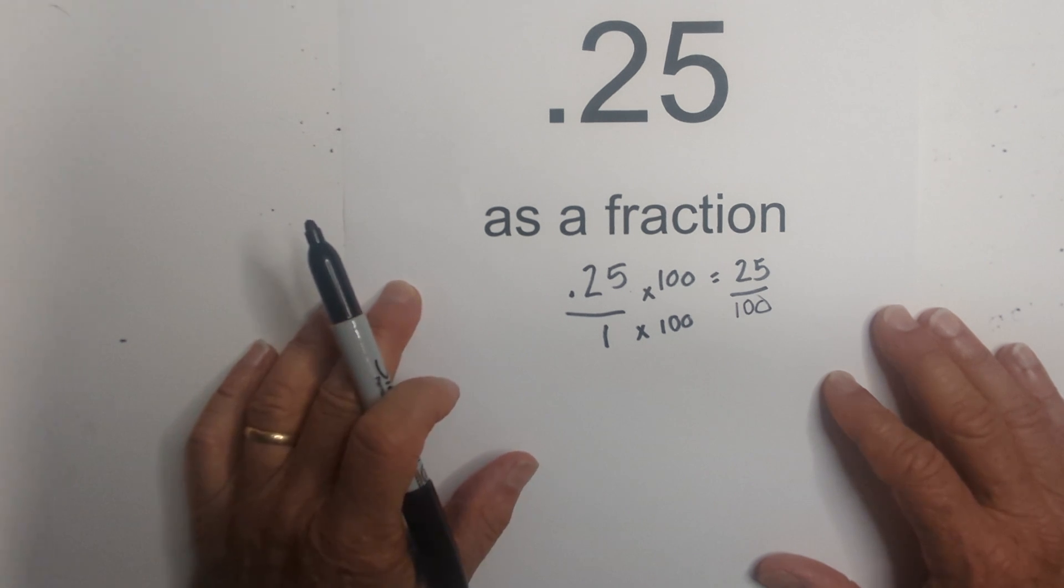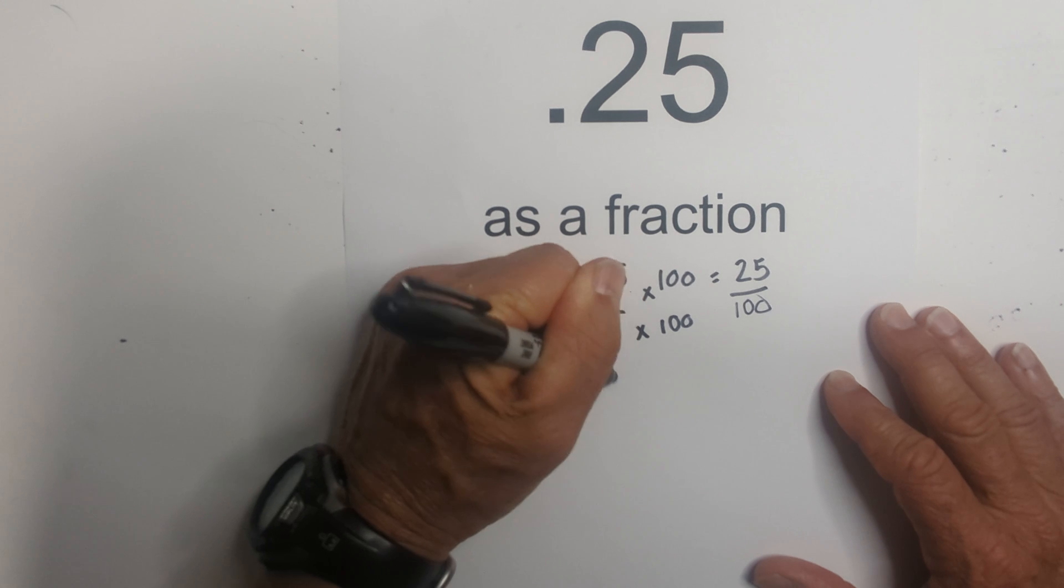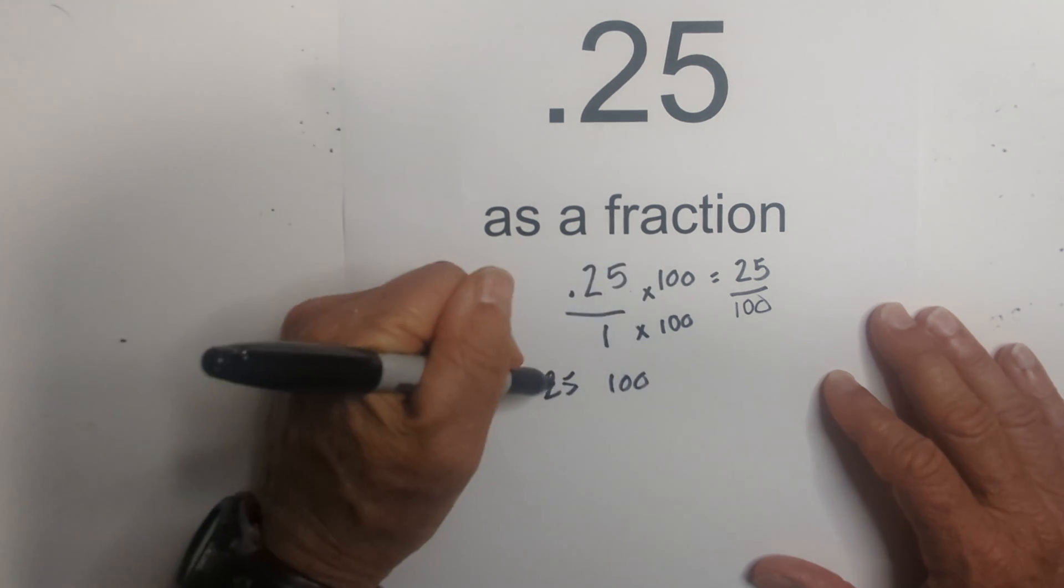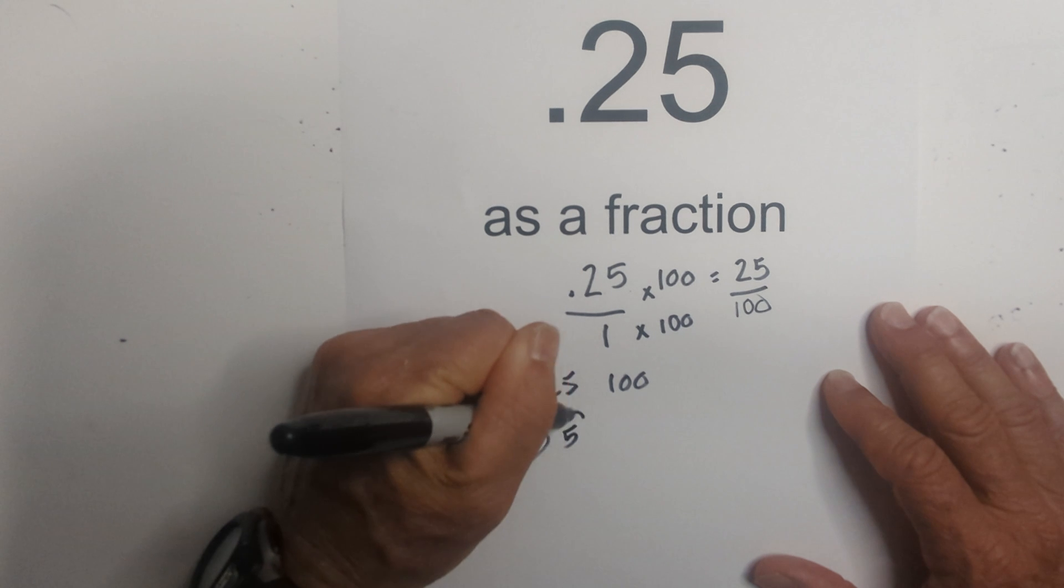If you don't know the greatest common factor, you use a factor tree, which I'll go over really fast. 25 and 100. 25, 5 times 5 equals 25. They're both prime. I will circle them.